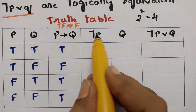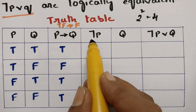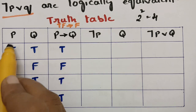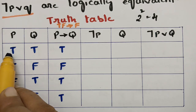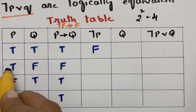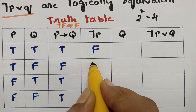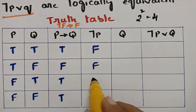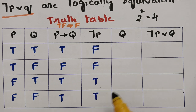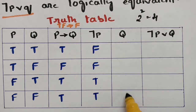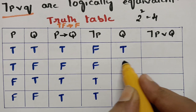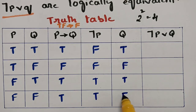Next we compute negation p. Negation means the negative statement of p: if p is true, write false; if p is false, write true. So negation p gives: false, false, true, true. Then the q column is: true, false, true, false.